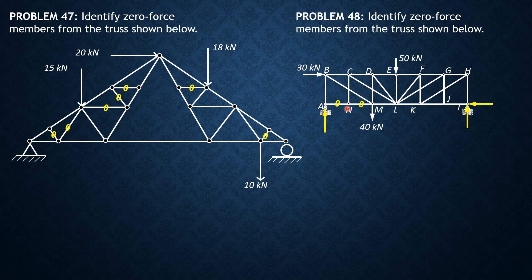Then, looking at joint N, two members are collinear — this is unique. Therefore, this unique member CN carries no force — it is zero.